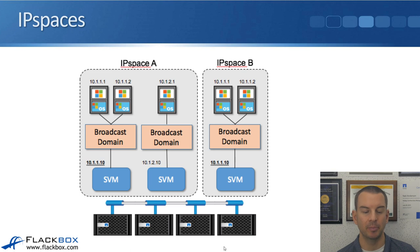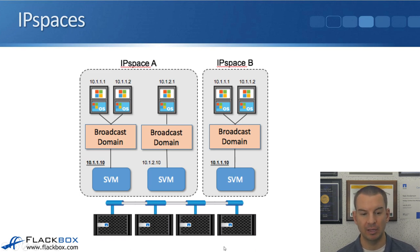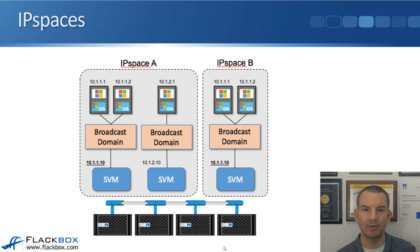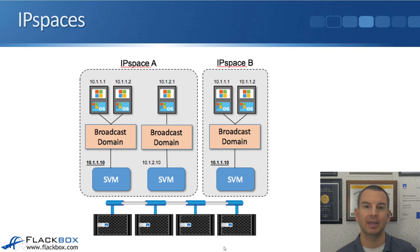You can see an example here. We've got three different SVMs and two different IP spaces. The reason we've created the separate IP spaces is that the first SVM is using IP address 10.1.1.10 and the third SVM is also using 10.1.1.10. To be able to do that, we have to put them into separate IP spaces. Don't worry for now about the broadcast domains shown here — we'll cover those in a later lecture.